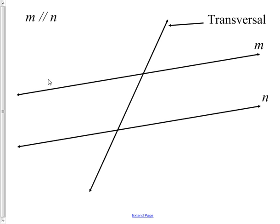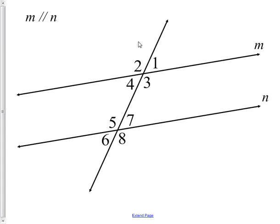Here we have two parallel lines — one is M and one is N. They are parallel: they never touch and they're always the same distance apart. Then we have a transversal that cuts those two parallel lines. From that we end up with eight different angles that are formed.